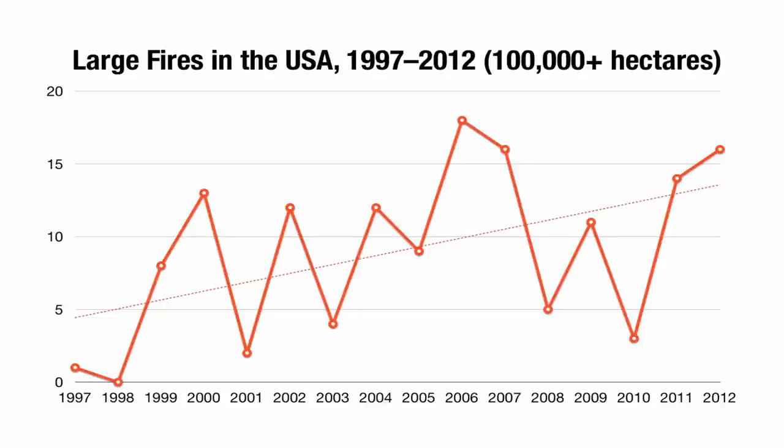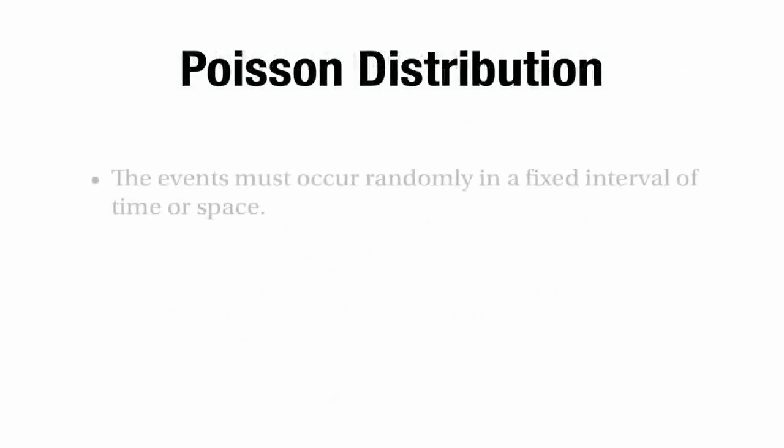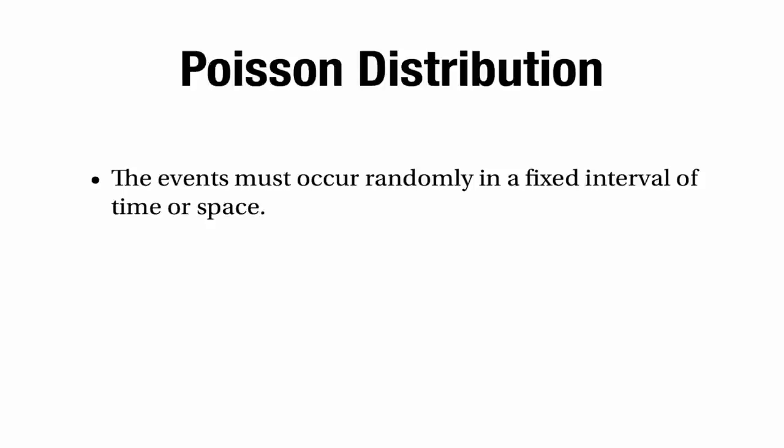Before moving on, let's think about whether the test statistic meets all the criteria for a Poisson distribution. The first criterion is that events must occur randomly in a fixed interval of time or space — that seems okay, since fires presumably occur randomly, caused by things like lightning strikes. Although some are triggered by human beings, they're mostly by accident, and even a deliberately set fire could still be seen as a random event.